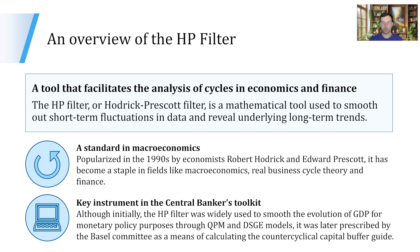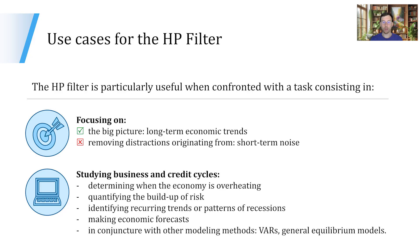Although initially it was designed to study the evolution of GDP for monetary policy purposes — to be used in quarterly projections models or dynamic stochastic general equilibrium models — it was later also prescribed by the Basel Committee as a means of calculating the counter-cyclical capital buffer guide. The HP filter is particularly useful when we want to focus on the big picture, that is the long-term economic trends, and we therefore want to use it when we need to remove distractions originating from short-term noise.